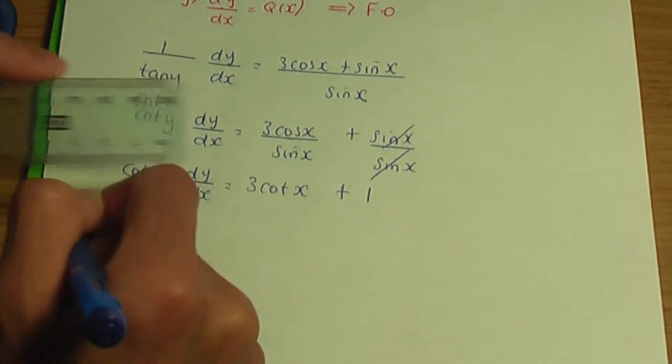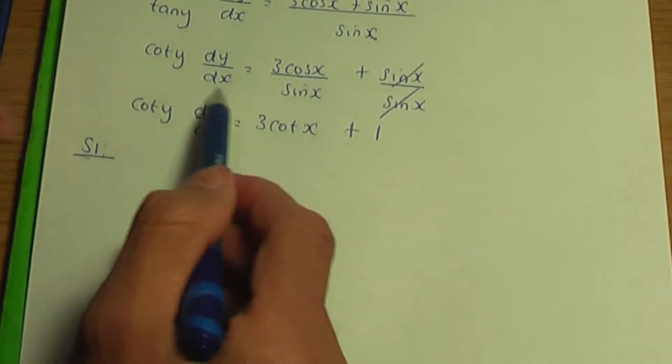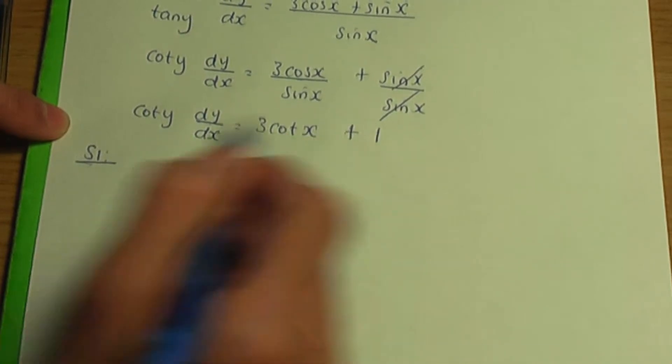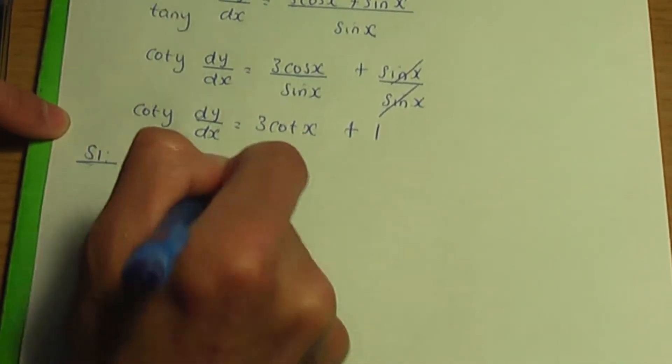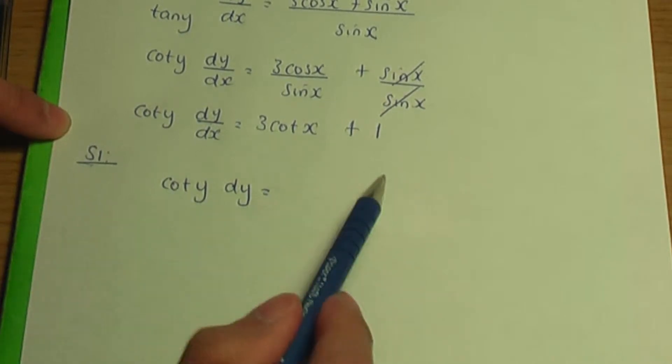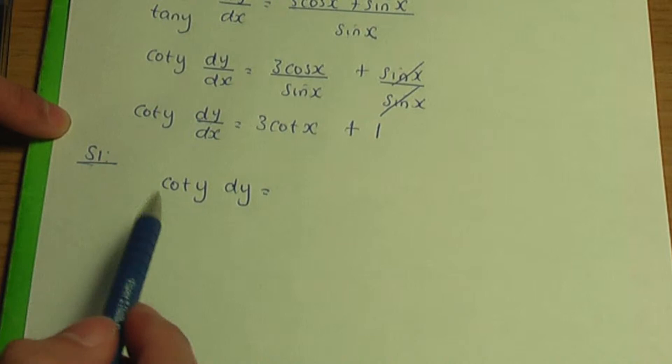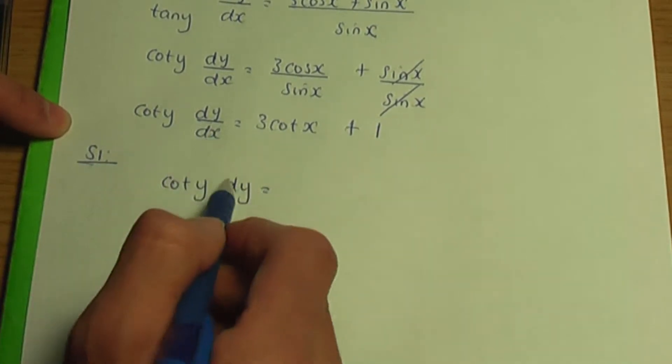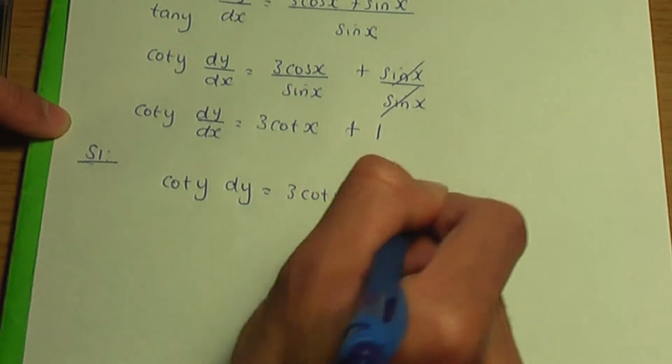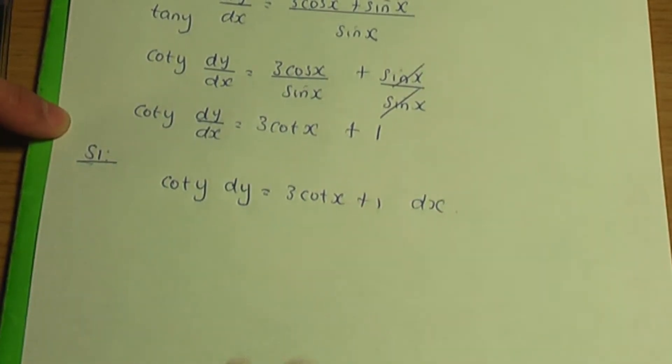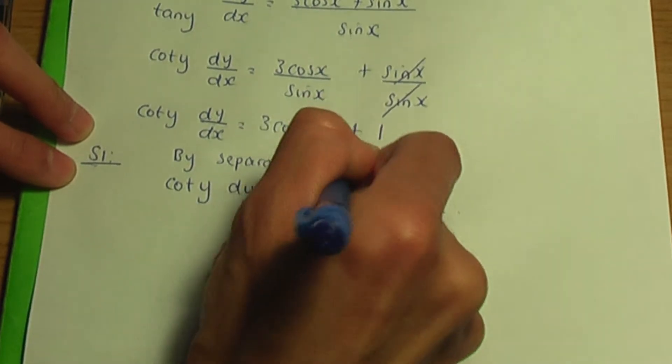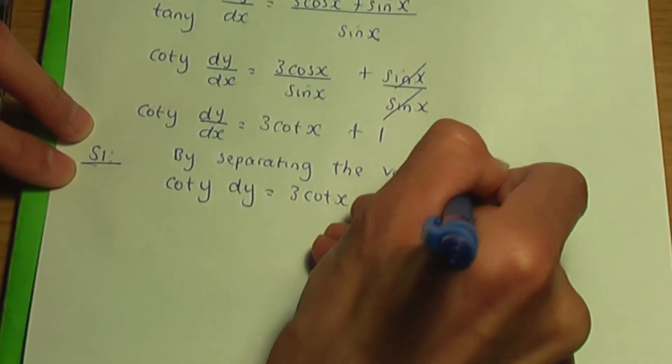So here is step number one. So if we think about dy over dx as a fraction, now technically it's a function, but if we think about it as a fraction, I can take the dx to the right, leaving me with the y term cot y and dy, and I'm going to keep my y terms and dy terms on the left. But it's up to you where you put your y and dy terms, because on the opposite side, you must write your x and dx terms. So since my y and dy terms are on the left, I'm going to leave my 3 cot x plus 1, here's my x term along with the dx term on the right. So remember this step is separating variables. So that is what step one's about, separating the variables.